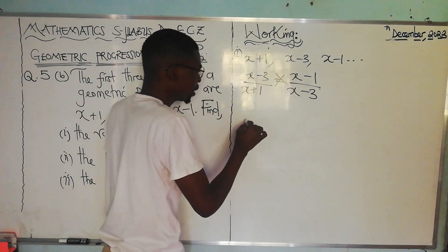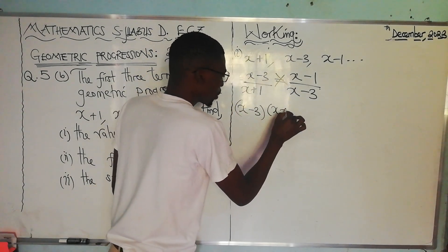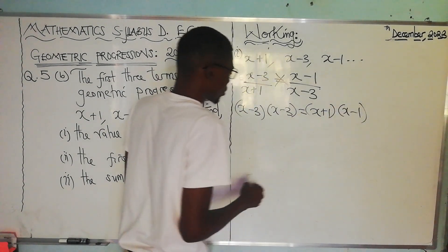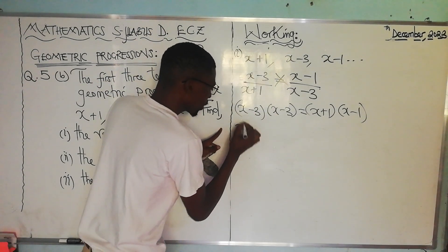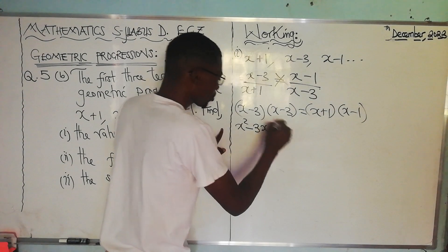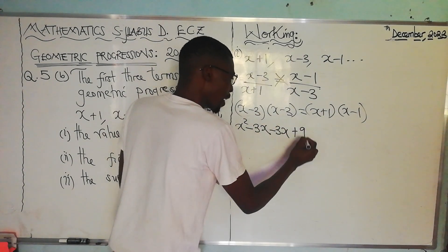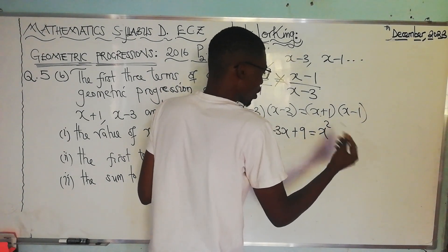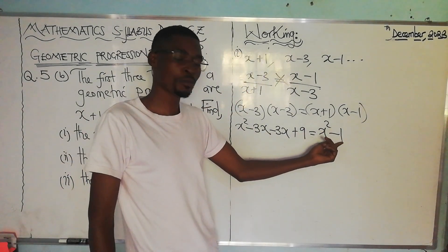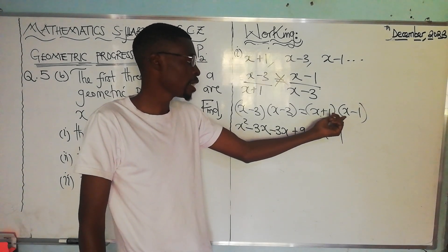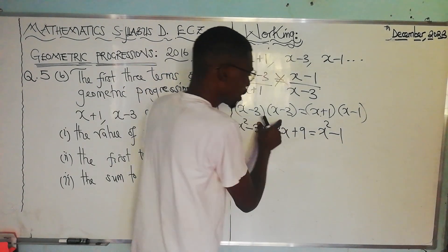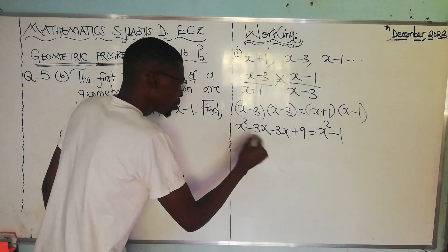Cross-multiplying gives us x minus 3 times x minus 3 equal to x plus 1 times x minus 1. Expanding the left side: x times x gives x squared, x times negative 3 gives negative 3x, negative 3 times x gives negative 3x, and negative 3 times negative 3 gives positive 9. The right side is x squared minus 1, using the difference of squares.